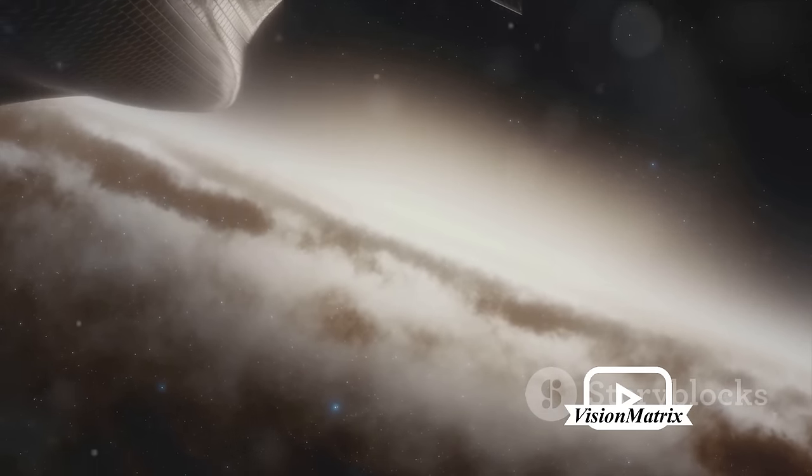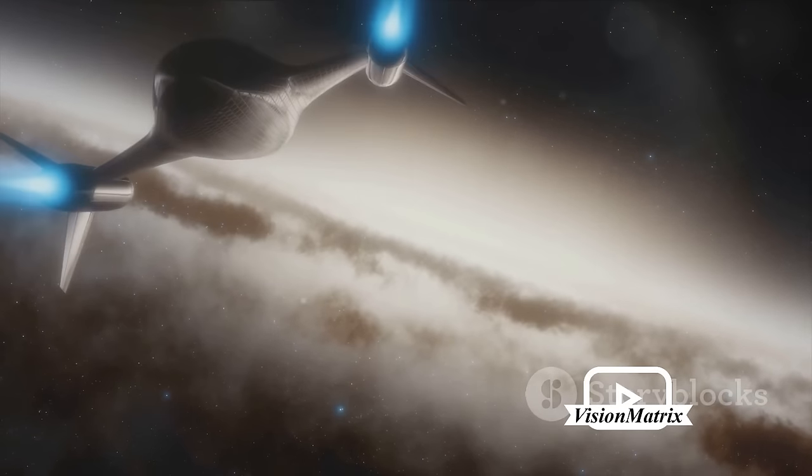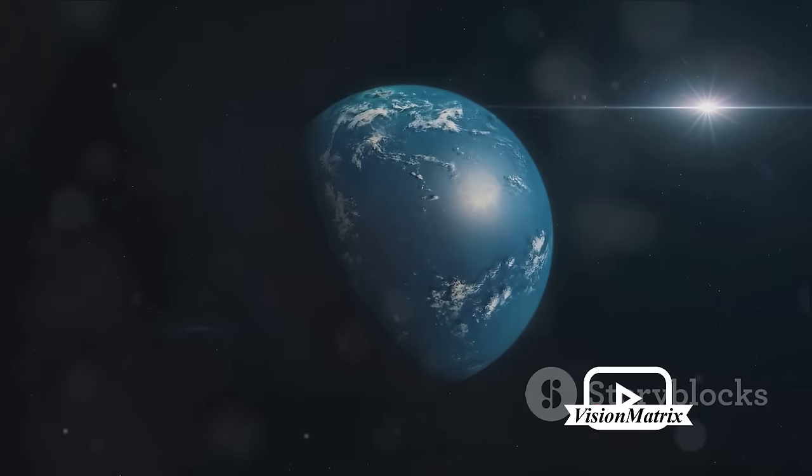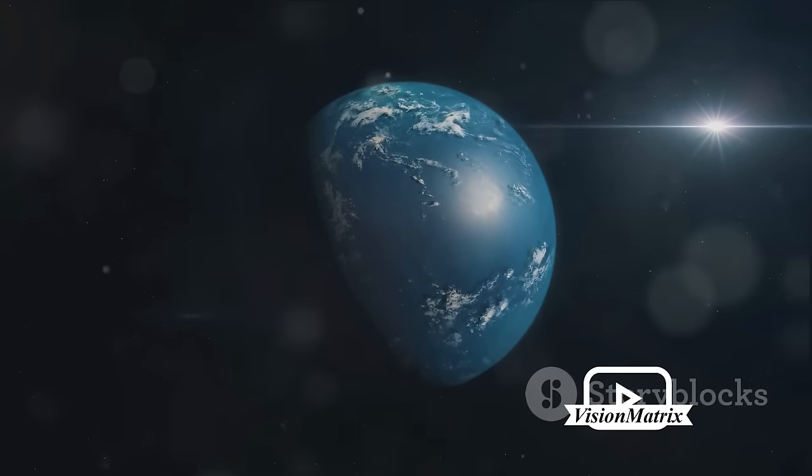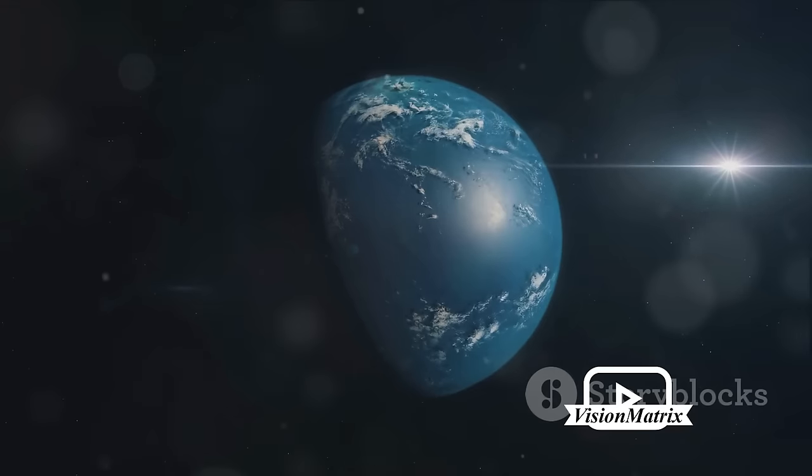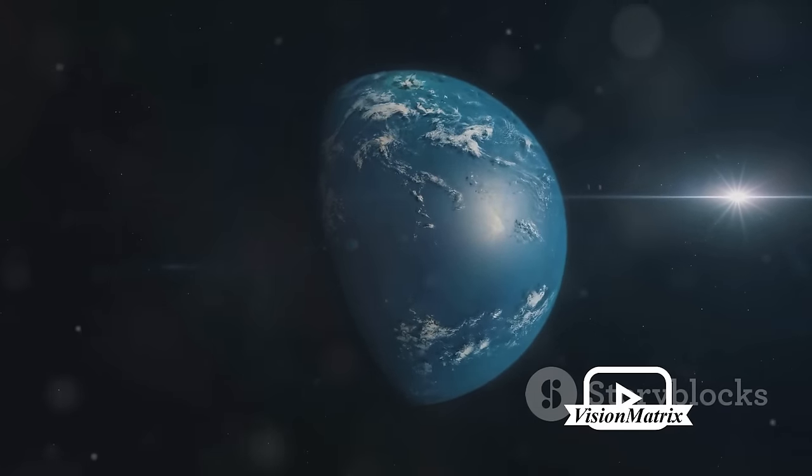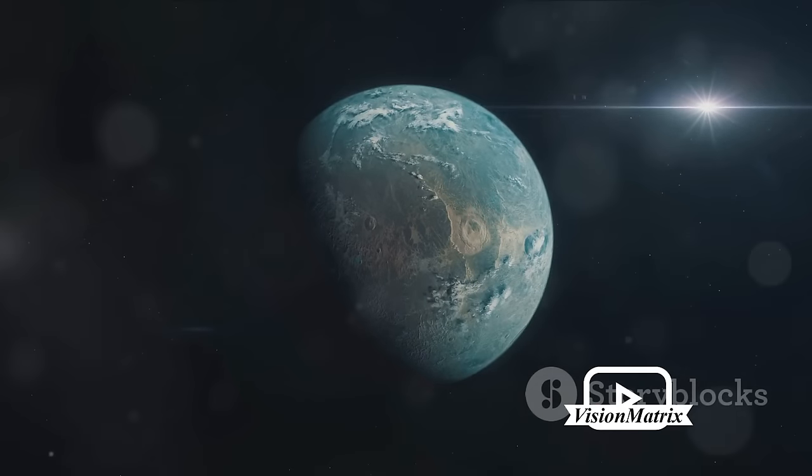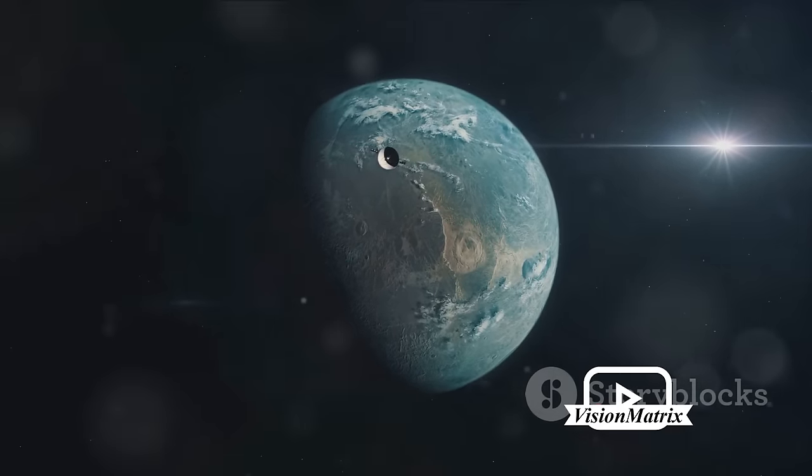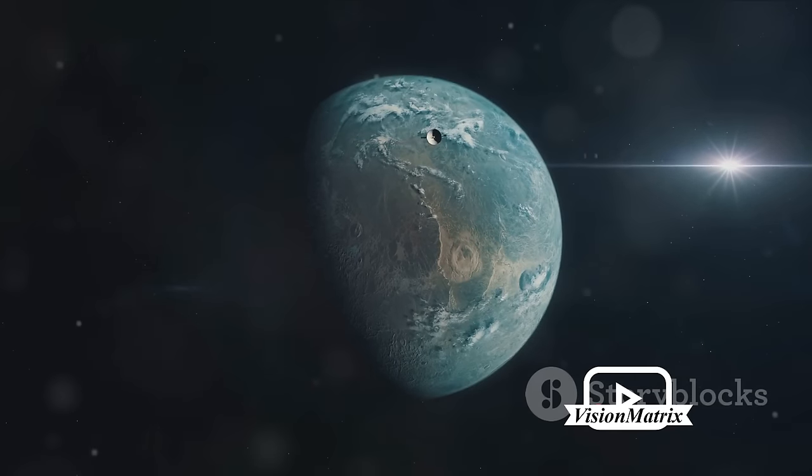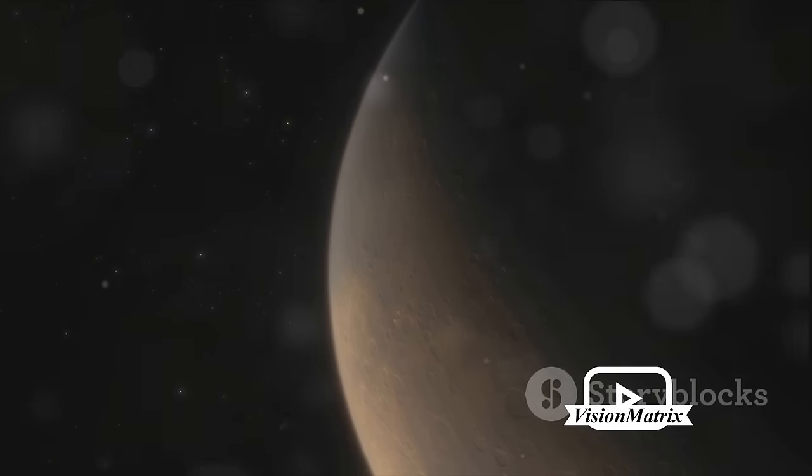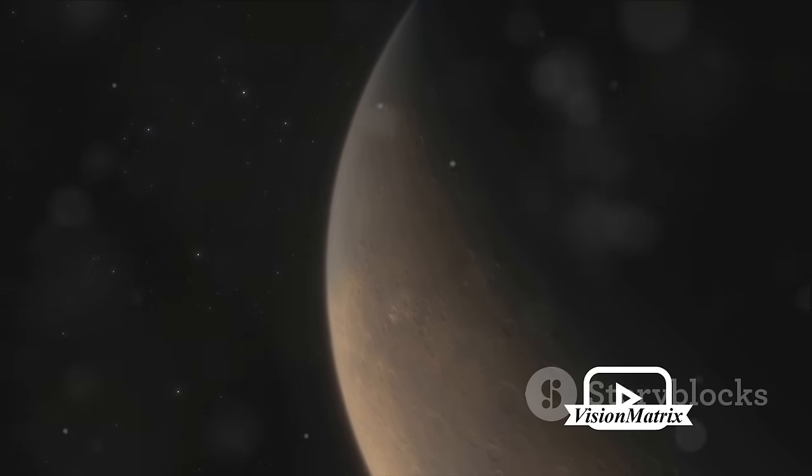From the depths of the cosmos, we've uncovered the existence of exoplanets, planets that orbit stars outside our own solar system. Some of these exoplanets are nestled within what we call their habitable zone, a Goldilocks region not too hot, not too cold, but just right for liquid water, a key ingredient for life as we know it. Since the detection of the first exoplanet in the early 90s, thousands more have been discovered, a testament to our growing understanding of the universe. And within these multitudes, a select few reside within their star's habitable zone.